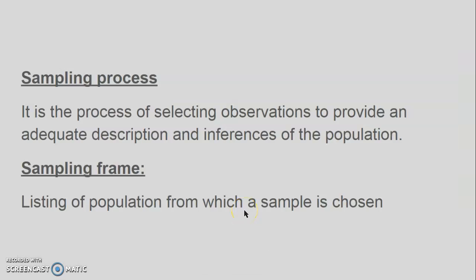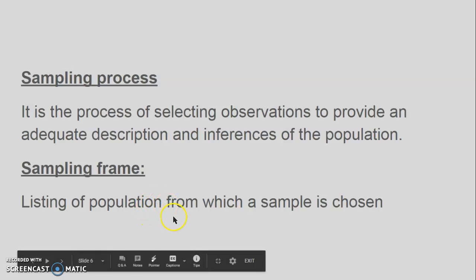There are a few terms you should know before starting into the types of sampling methods. The sampling process is a process of selecting observations to provide an adequate description and inferences — these are the steps involved in selecting the sample. Before selecting the sample or starting the sampling process, the researcher has to make a list of the population, which is called the sampling frame.